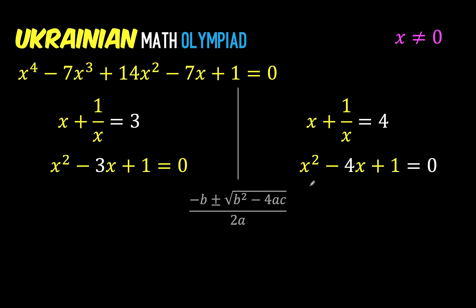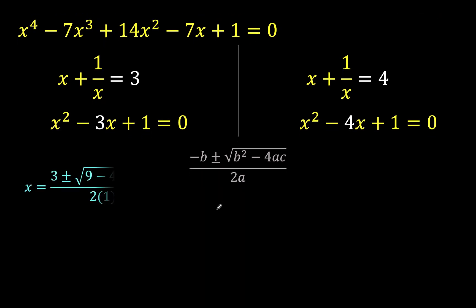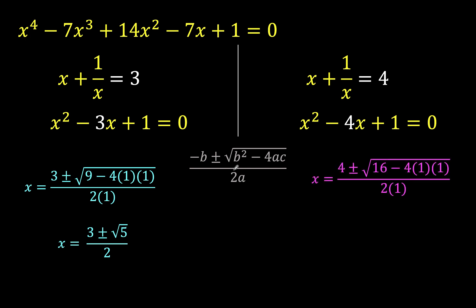For the first equation, a equals 1, b equals negative 3, and c equals 1. Substituting into the quadratic formula gives x equals 3 plus or minus the square root of 9 minus 4, all over 2. The radical simplifies to square root of 5, giving x equals 3 plus or minus the square root of 5, all over 2. For the second equation, a equals 1, b equals negative 4, and c equals 1. Then 16 minus 4 is 12, and the square root of 12 simplifies as 2 square root of 3. With the common factor of 2, this simplifies to x equals 2 plus or minus the square root of 3.